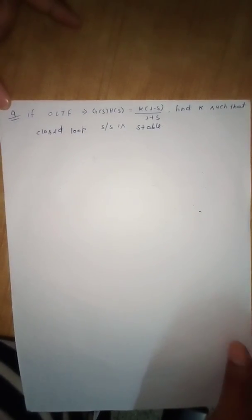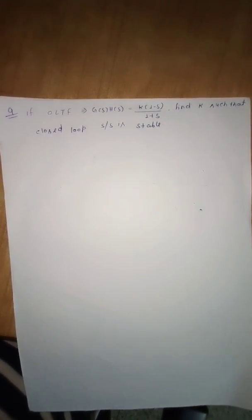Now let us see the fourth numerical for calculating stability for a system using the RH criteria. According to the numerical, we have open loop transfer function G(s)H(s) equal to k(1 - s) over (1 + s). We need to find the value of k such that the closed loop system is stable.